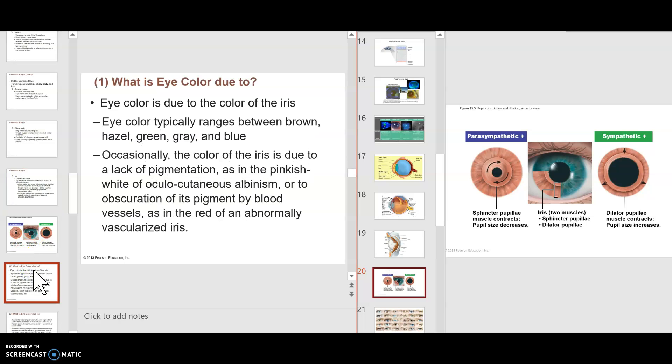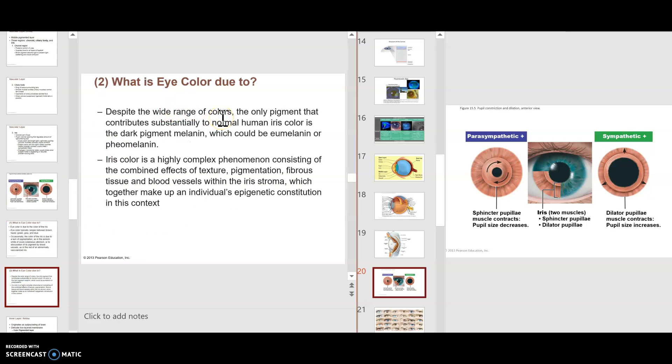So I come here then, and I say, what is eye color due to? Eye color is due to the color of the iris. Eye color typically ranges between brown, hazel, green, gray, blue. Occasionally the color of iris is due to a lack of pigmentation, which is the pinkish white that you would see in the albino. Now, what actually causes the activity there? That melanin. There's a eumelanin, which is a dark brown, and a pheomelanin. So the combination of those two combined with other factors is what gives the coloration of the eye. So there's no blue melanin. The point is that the coloration is due to variations within the melanin, and it's also very complex because it consists of the texture, the pigmentation, the fibrous tissue, the blood vessels within this iris, within the iris stroma.